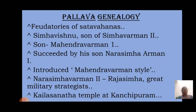Narasimhavarman II ruled from 695 to 722 AD and is also known as Rajasimha. He was a great military strategist who exchanged ambassadors with China. His reign was comparatively free from political disturbance, so he could concentrate on temple-building activities. During his reign, the famous Kailasanatha temple at Kanchipuram was built.